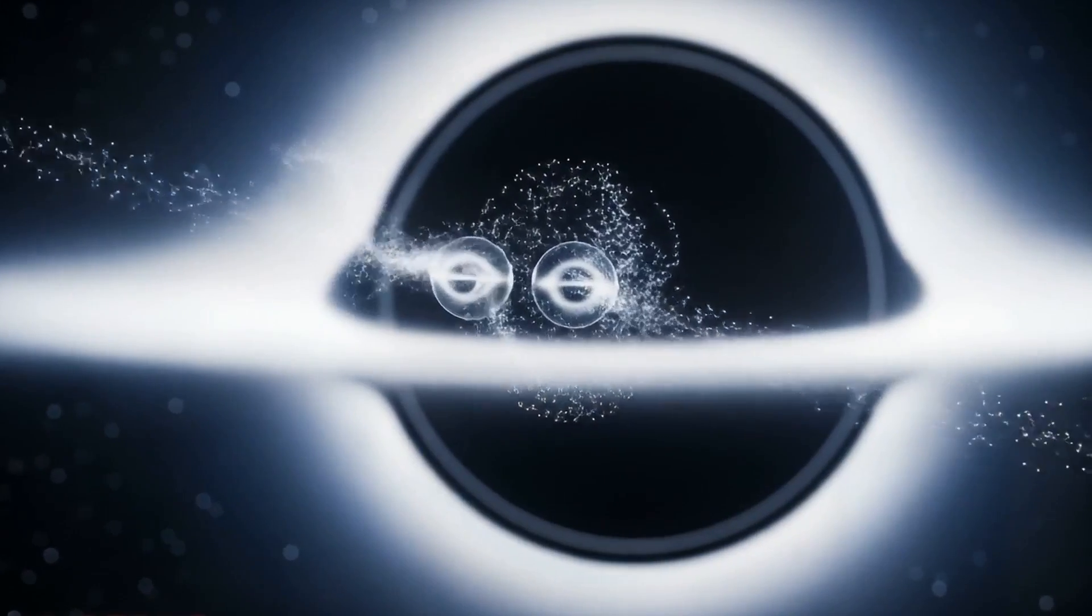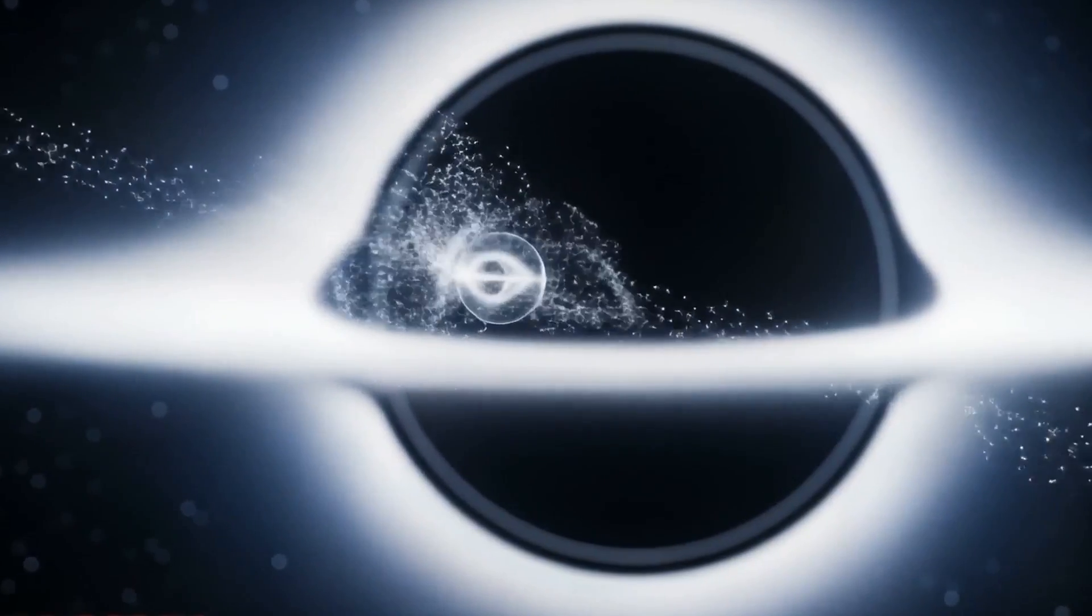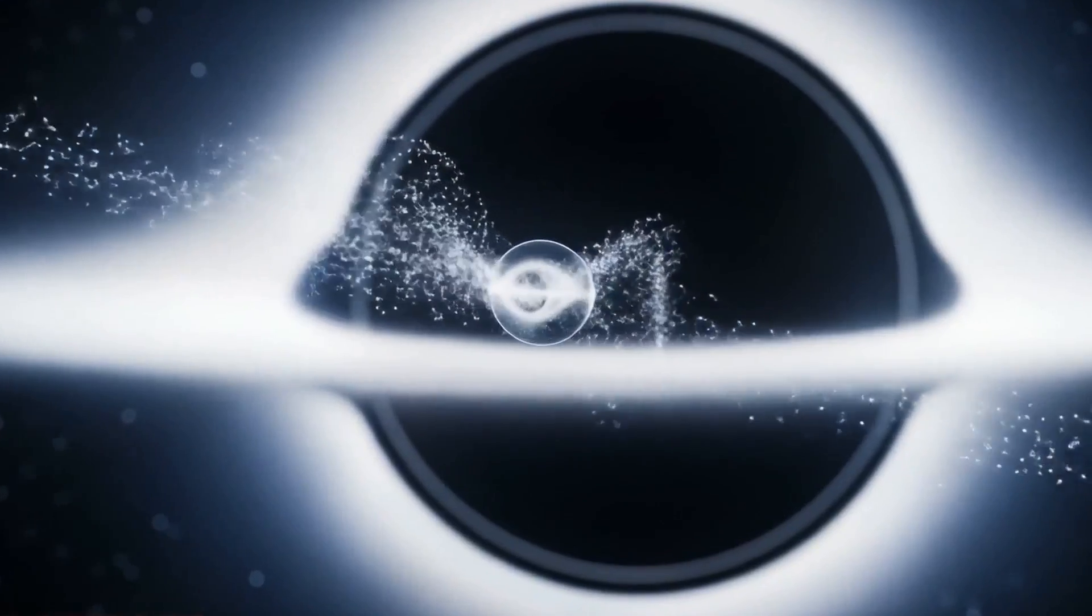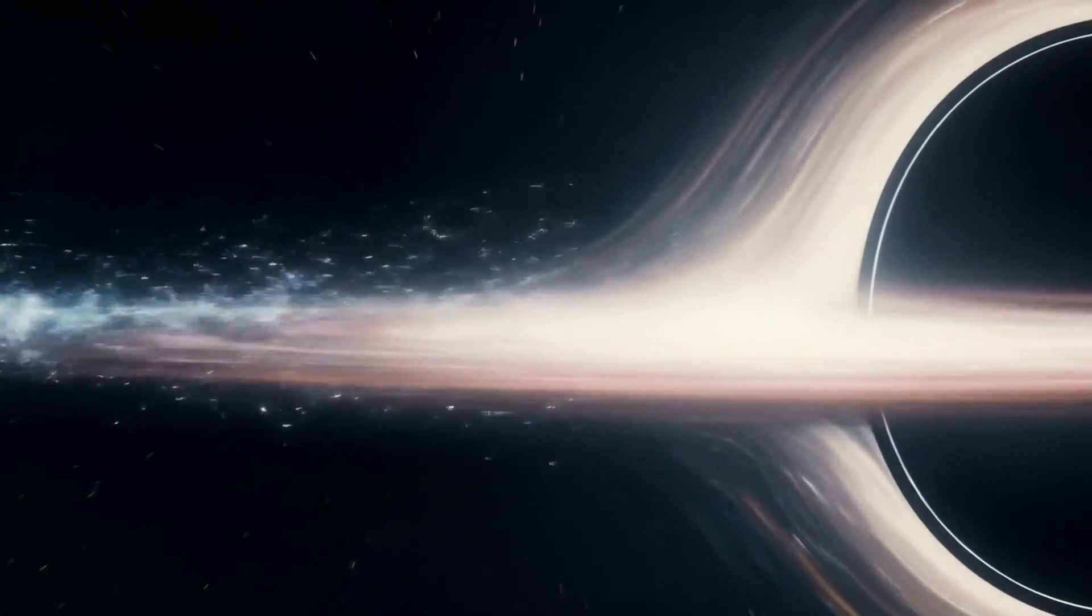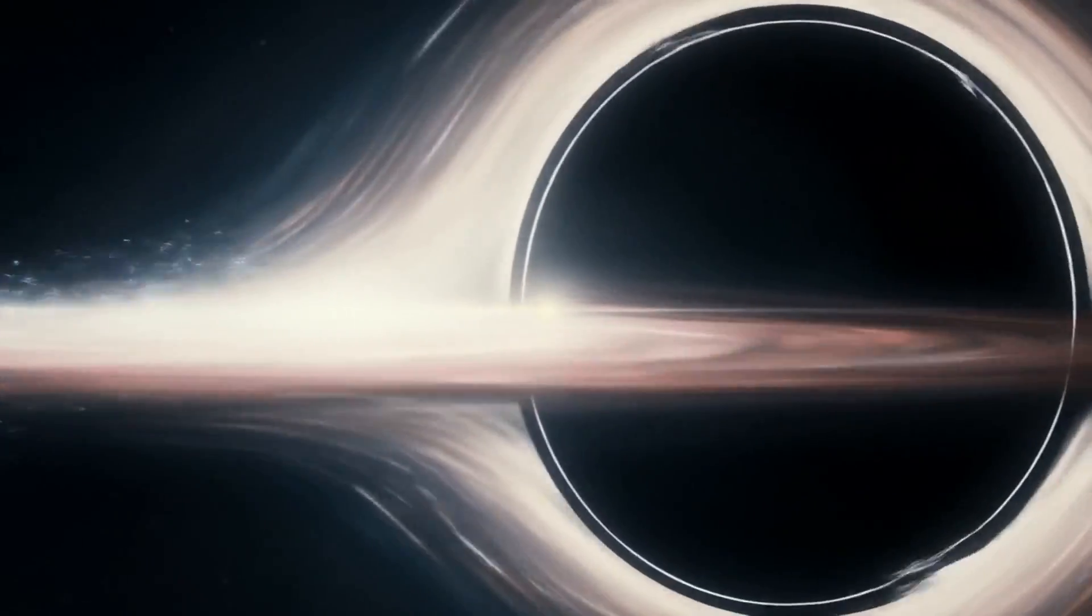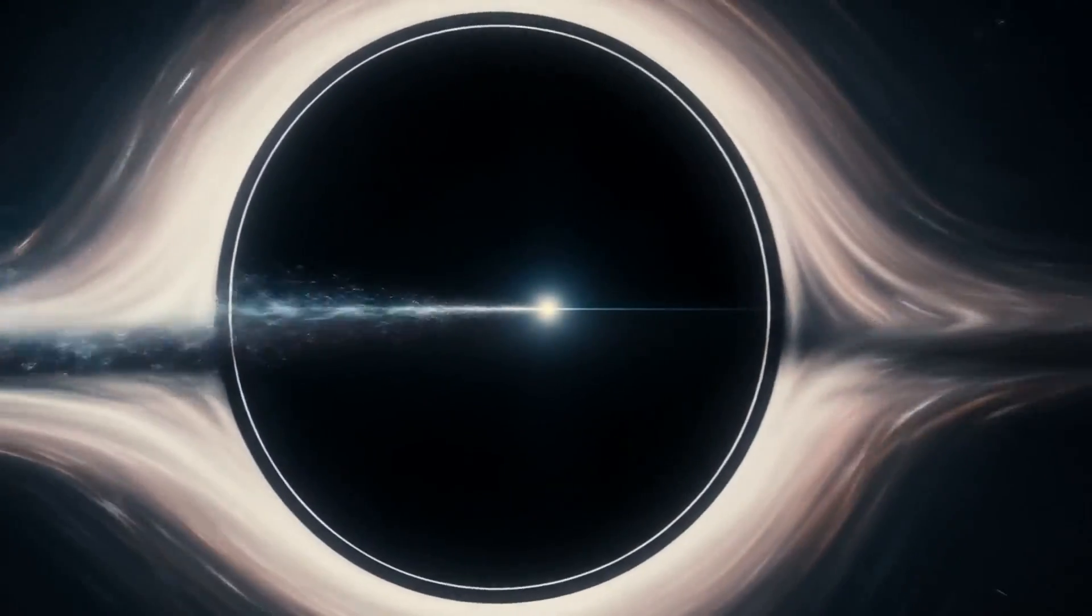When these particles form near a black hole, they become entangled. One falls inside with negative energy. The other escapes with positive energy. The black hole loses mass. Its mirror particle becomes real.